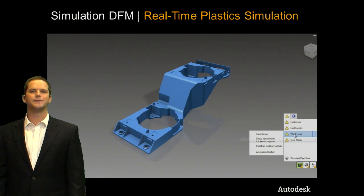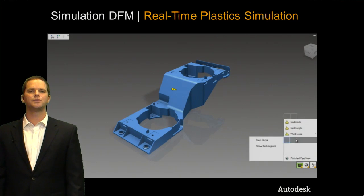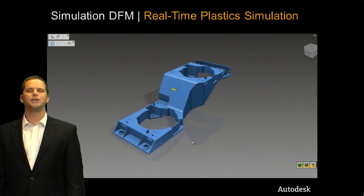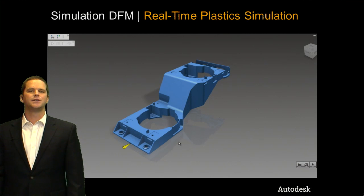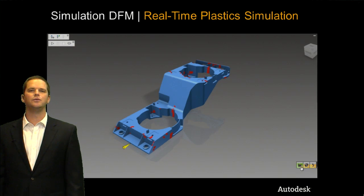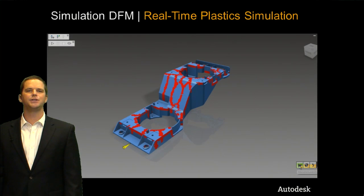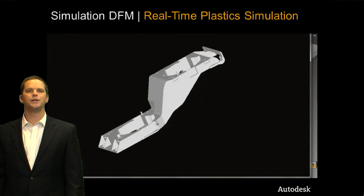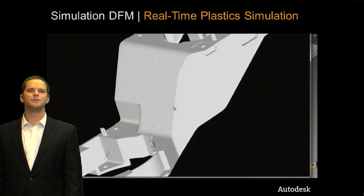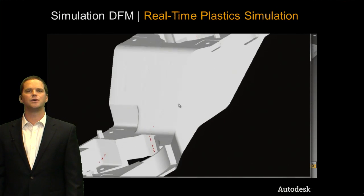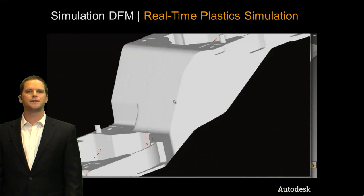The next thing we want to talk about is weld lines. These are available because we're doing the real-time filling analysis. The alert gives you the option to pull up the animation and the injection location toolbars. The best part about this is we can actually play with different gating configurations so that we get the best placement of the weld line. Also, thanks to the fill preview, we can predict sink marks. The plot itself is nice, but to really understand how bad they are, let's use the finished part preview. With this, we can get a better idea of the location and the relative visibility of the sink marks, and it also shows weld lines with little red dots. All of this is very important information to have when aesthetics of your part are critical.